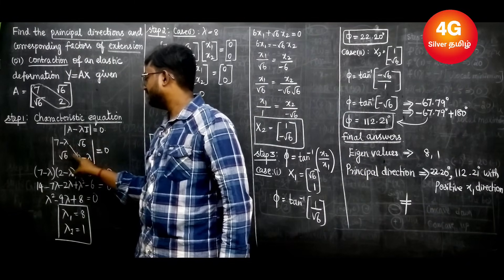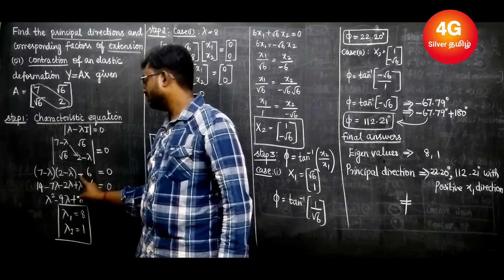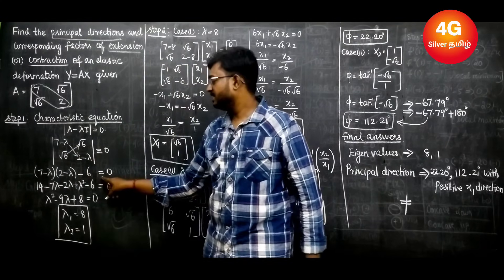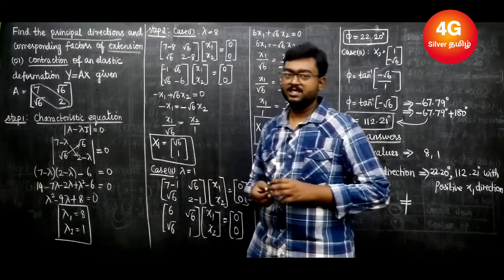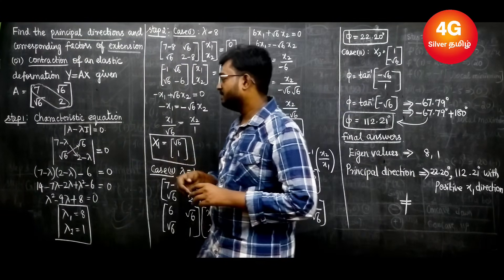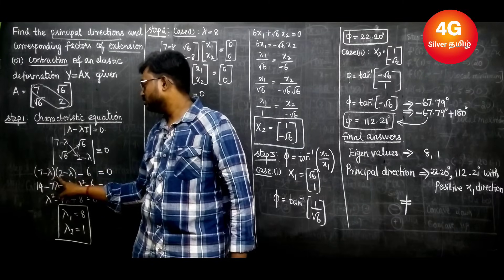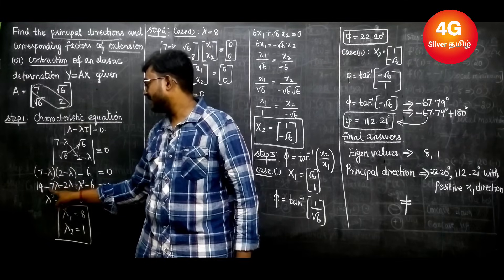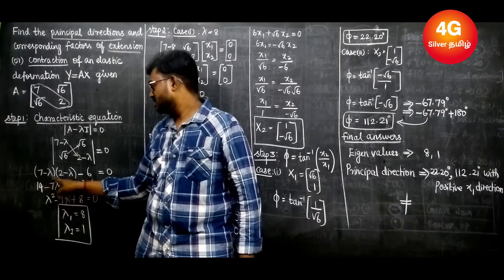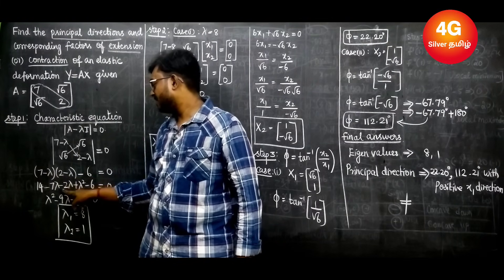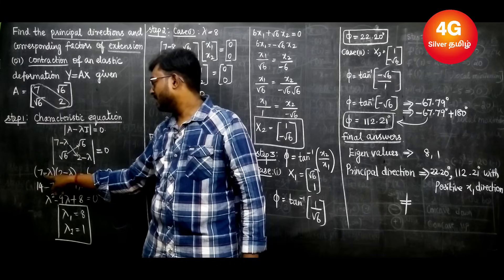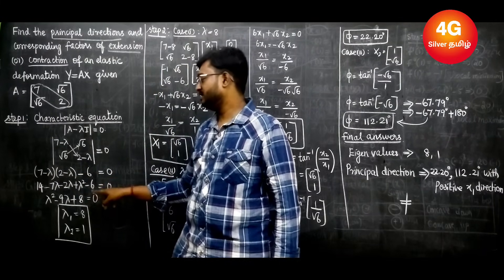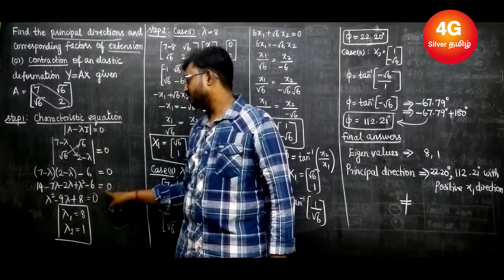Expanding: (7−λ)(2−λ) − √6·√6 = 0. Multiplying out: 14 − 7λ − 2λ + λ² − 6 = 0.